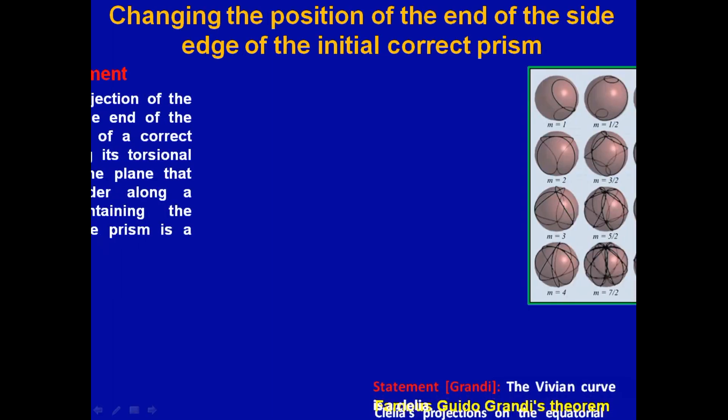Also, for lateral edge that equals the diameter of the circle described around the base, the projection of the length along which the end of the constant side edge of a correct prism moves during its torsional deformations onto the plane that touches a cylinder along a straight line containing the original edge of the prism is a Guido-Grandi rose.